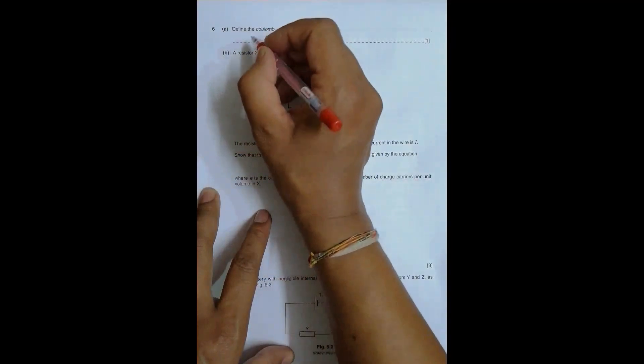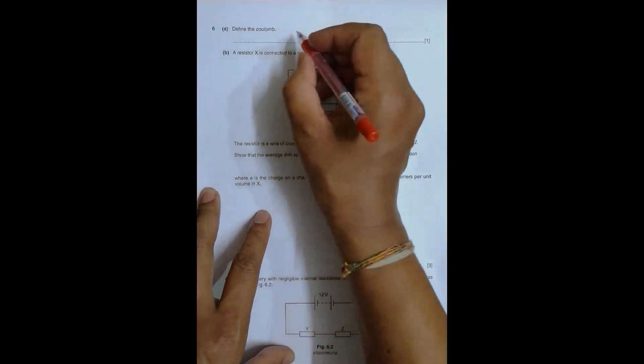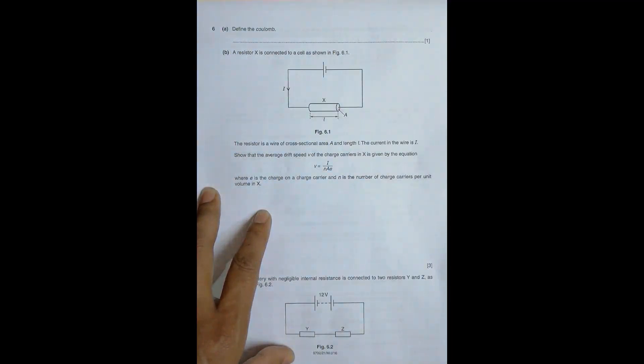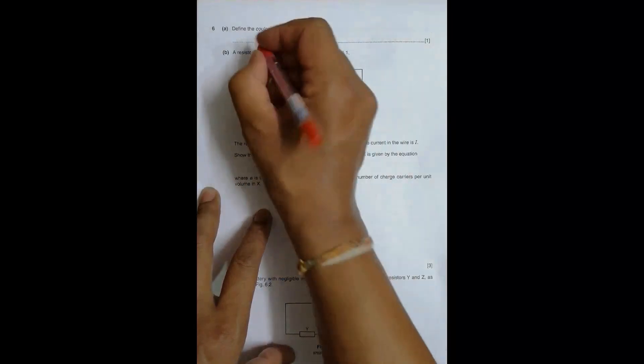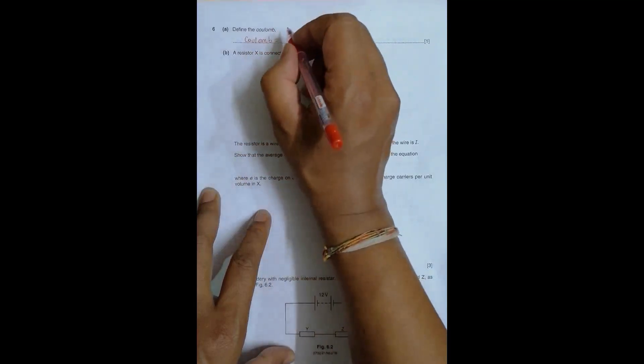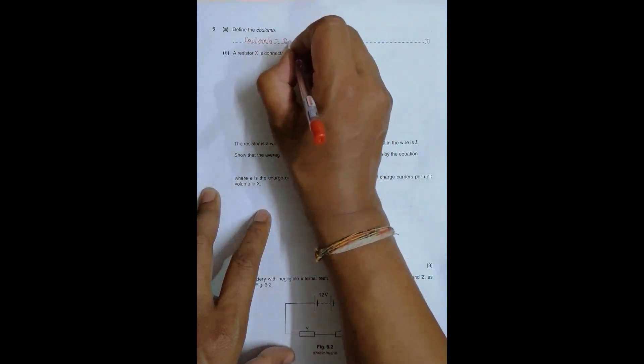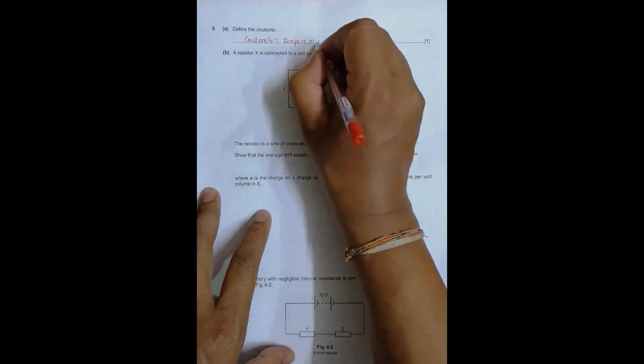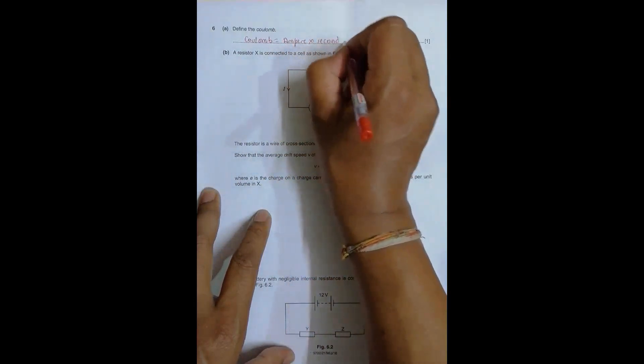The first question asks us to define the coulomb. So the coulomb is actually the SI unit of charge. Since we have charge equal to current into time, the SI unit coulomb should also be equal to the product of the SI units of current and time. So one coulomb is equal to the SI unit of current, which is ampere, into the SI unit of time, which is second. So coulomb should be equal to ampere into second.